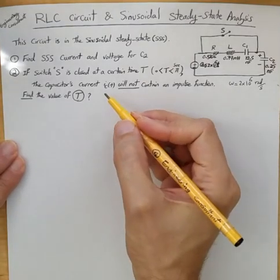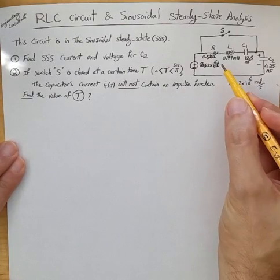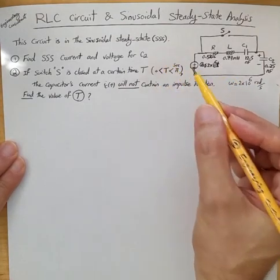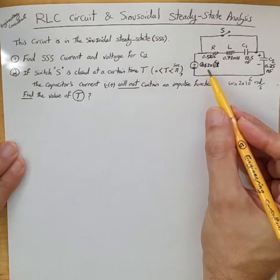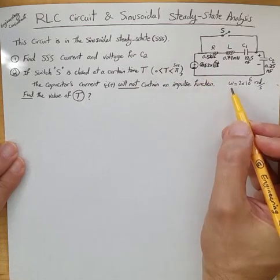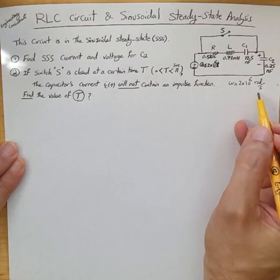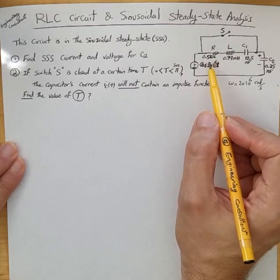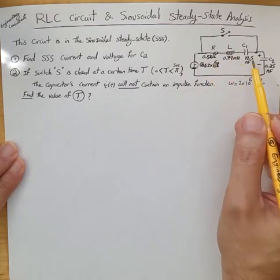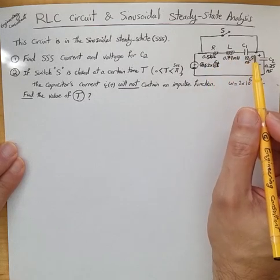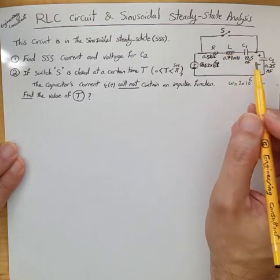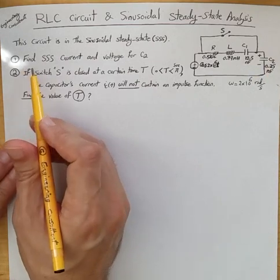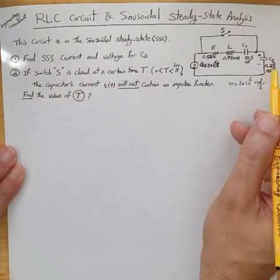Sinusoidal steady state analysis of an RLC circuit. In this RLC circuit example, the circuit is in sinusoidal steady state (SSS). A voltage source cosine of 2×10⁶·t, where omega is 2×10⁶ radians per second, is given in series with resistor R of 0.5 kilohms, inductor L, capacitor C1, and before the closure of switch S, capacitor C2. The first part of the question is to find the SSS current and voltage for C2.